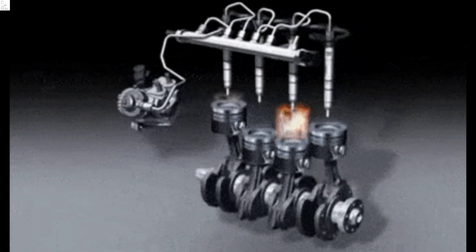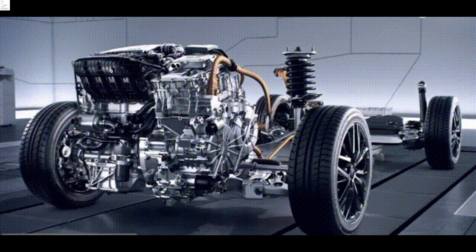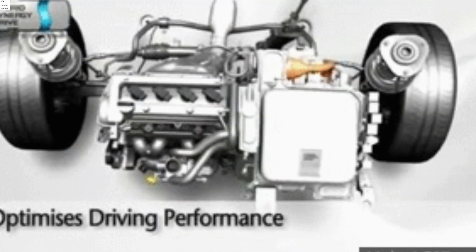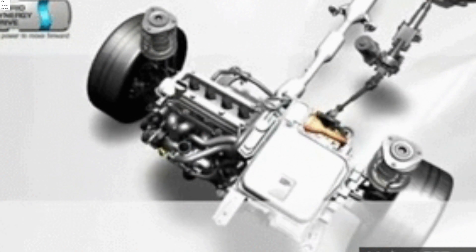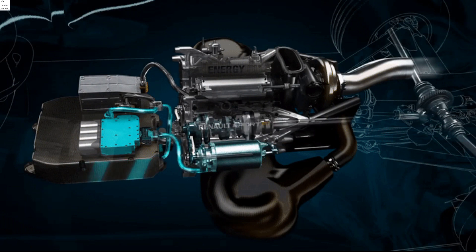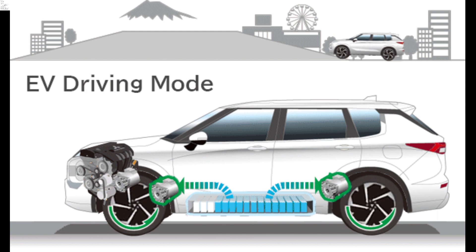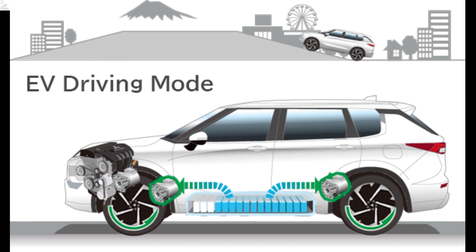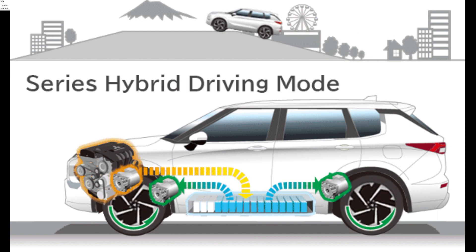2. Hybrid engine: hybrid engines combine an internal combustion engine with an electric motor. The primary purpose of the electric motor is to assist the internal combustion engine, improving fuel efficiency and reducing emissions. The electric motor can be powered by batteries that are charged through regenerative braking or by the internal combustion engine itself.